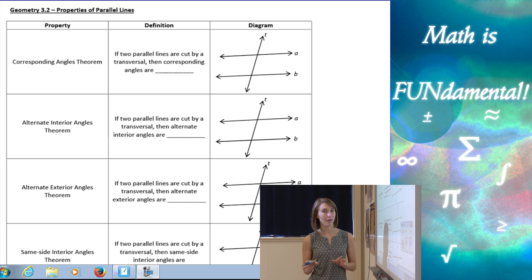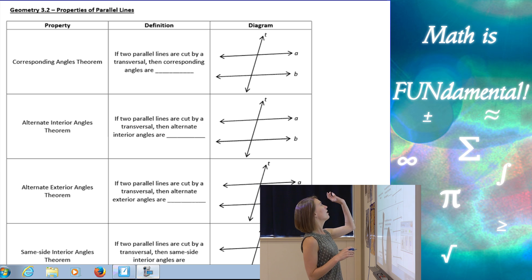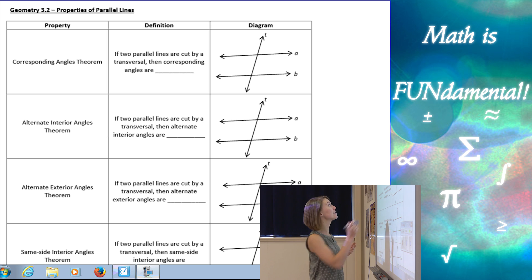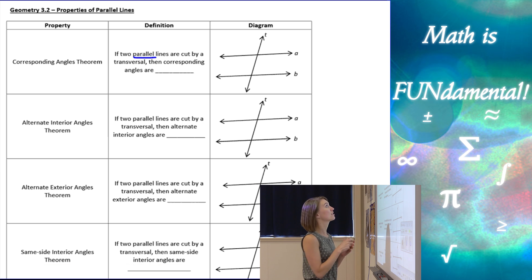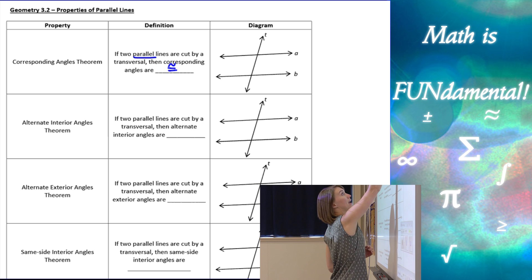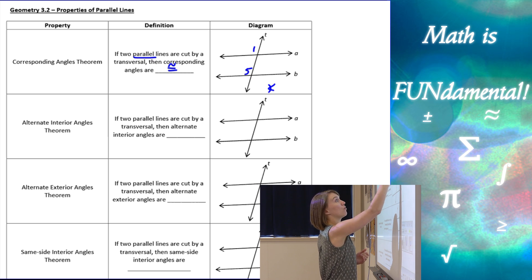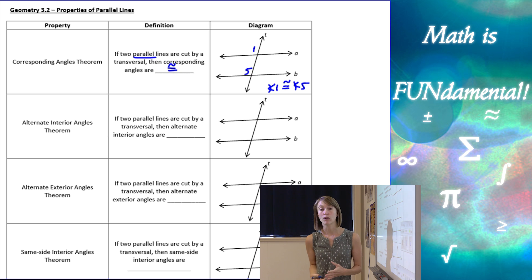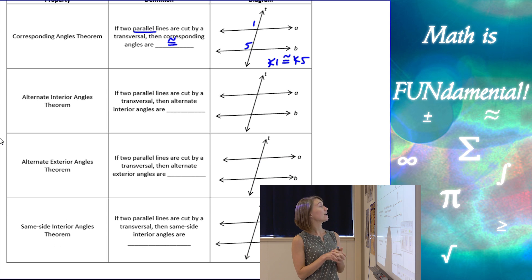It does not work if the lines aren't parallel, so keep that in mind. The first theorem is the Corresponding Angles Theorem, which says if two parallel lines are cut by a transversal, then corresponding angles are congruent. For example, if I have angle one and angle five, I can conclude that angle one is congruent to angle five because they are corresponding angles.